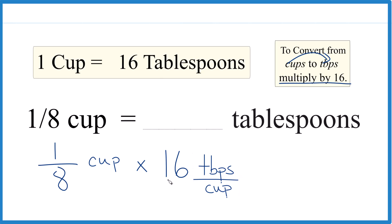You can think of that as 16 tablespoons in one cup. So we multiply one times 16, which equals 16. Eight times one equals eight, and 16 divided by eight is two. So one-eighth of a cup equals two tablespoons.